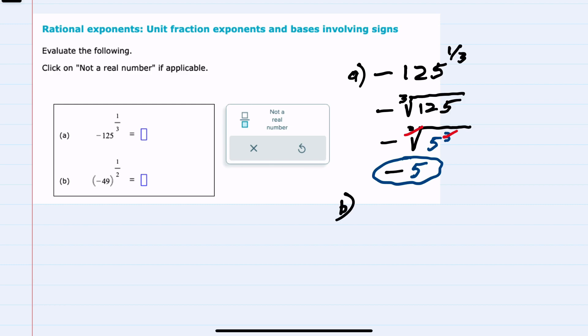b is a little different, in that the negative is inside of the parentheses, and the one-half power is on the outside. Rewriting this, I could say that this is the square root of negative 49, with the negative under the radical.